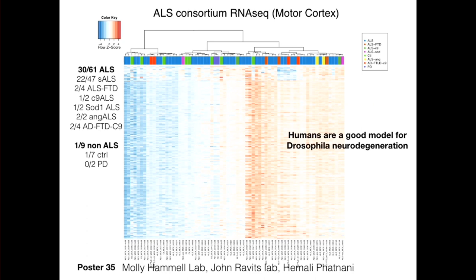I want to point you to poster 35, from a collaboration led by Molly Hamill's lab in collaboration with my lab, John Rabbits' lab, and Hamali Fatnani at the New York Genome Center, as part of a big ALS consortium doing RNA-sequencing on multiple brain regions and tissues from ALS patients. Humans are a good model for Drosophila because in a fairly significant fraction of ALS subjects, we see what looks like a transposon storm similar to what we see in the flies, at least at the expression level.